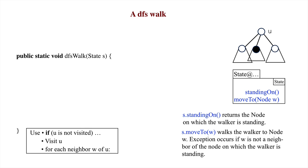Now let's look at the specification of DFS walk. First, the walker is standing on a node given by state s. We call it u.